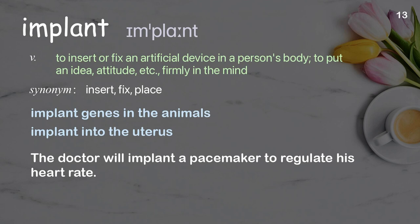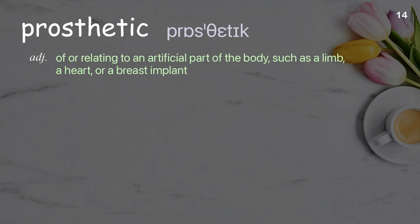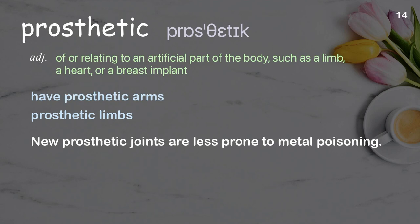Prosthetic: of or relating to an artificial part of the body such as a limb, a heart, or a breast implant. Examples: have prosthetic arms, prosthetic limbs. New prosthetic joints are less prone to metal poisoning.